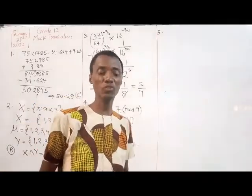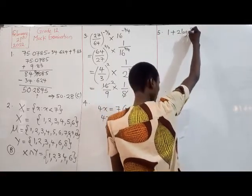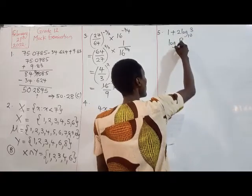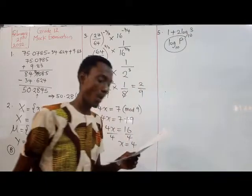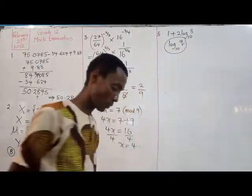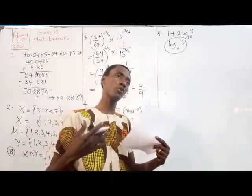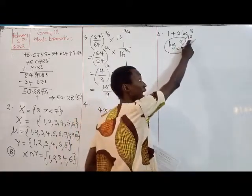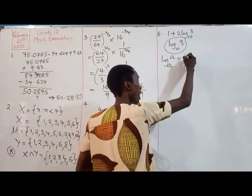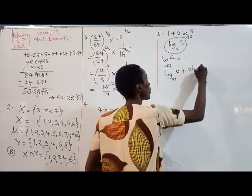Question five asks us to express 1 + 2 log₁₀ 3 in the form log₁₀ Q. There's a rule that log of a base to itself equals 1, so 1 = log₁₀ 10. We then have log₁₀ 10 + 2 log₁₀ 3. Applying the power rule, 2 log₁₀ 3 becomes log₁₀ 3².